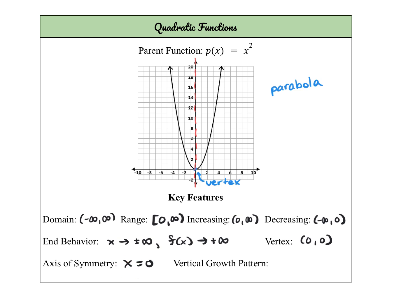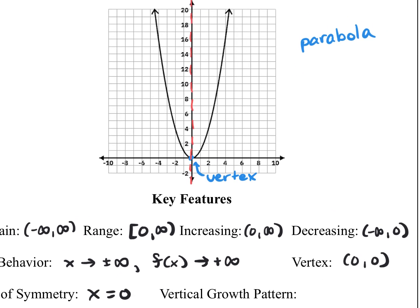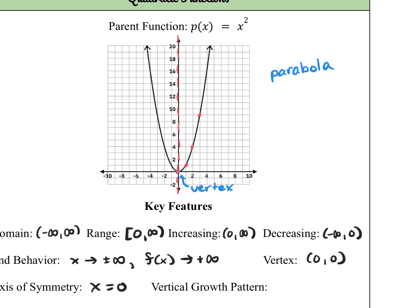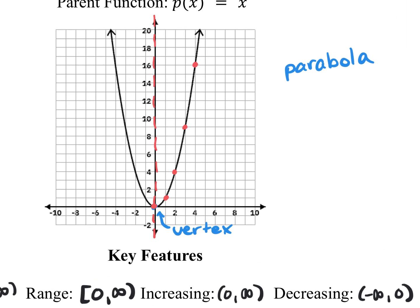The last thing I want to talk about briefly is this vertical growth pattern that these types of functions follow. I'm going to look at the change in the vertical height — the change in the y values between each of these coordinates, going one unit to the right each time. So we have (1,1), (2,4), (3,9), (4,16). The vertical distance between the first two coordinates is 1. Then I'm adding 3 to the y value, then adding 5, then adding 7. So you may see a pattern forming here.